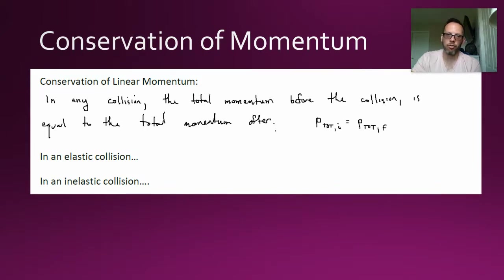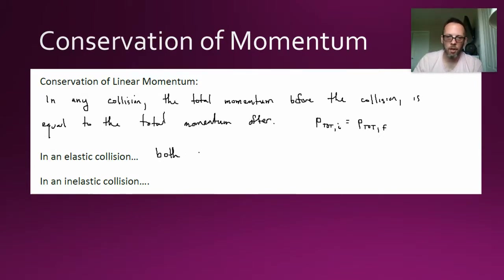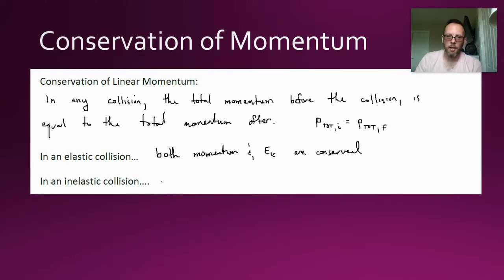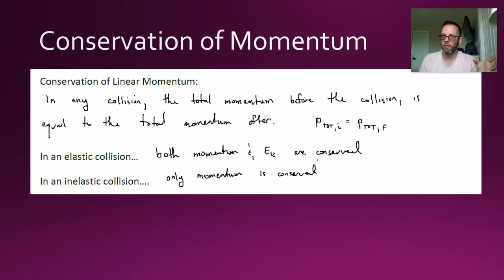In an elastic collision — that's like for loosely speaking really bouncy objects, like two rubber balls connecting together — both momentum and kinetic energy are conserved. But then in inelastic collisions, including purely inelastic collisions where the objects stuck together afterwards, only momentum is conserved.